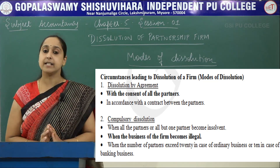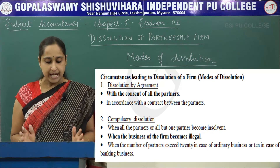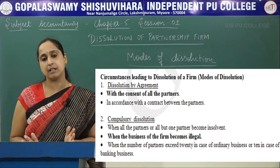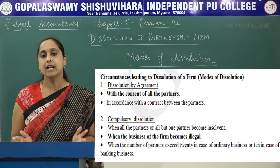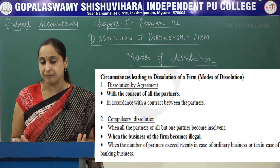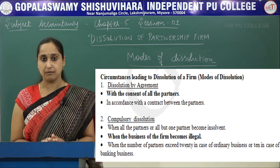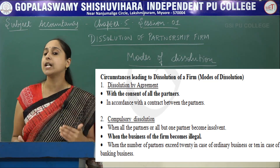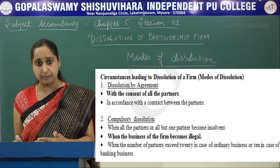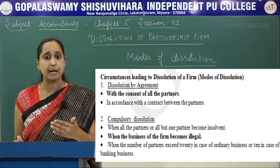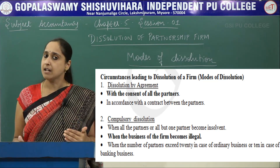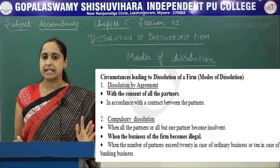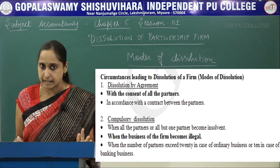First one is Dissolution by Agreement. With the consent of all the partners, if all the partners feel that they should close down their business, then they close down their business — the firm is closed. In accordance with the contract among the partners, if they have made any contract among themselves, then the firm is closed. This is the first case: Dissolution by Agreement.